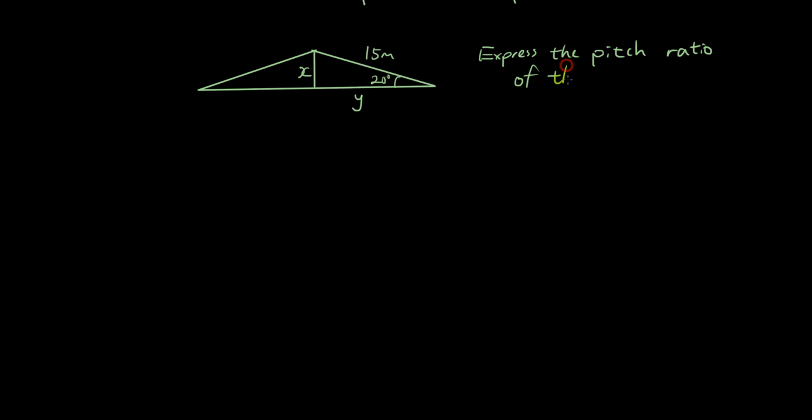Here is an interesting one: express the pitch ratio of this roof truss. Well, this is a right angle triangle over here, so let's do sin theta equals opposite over hypotenuse. We have x is the opposite, 15 is the hypotenuse, y is the adjacent.